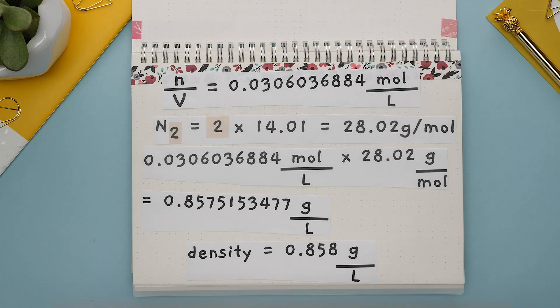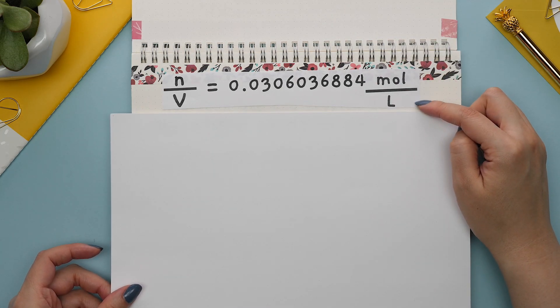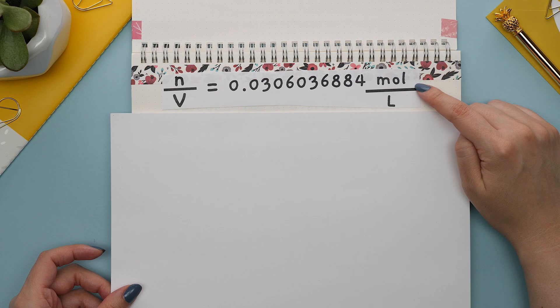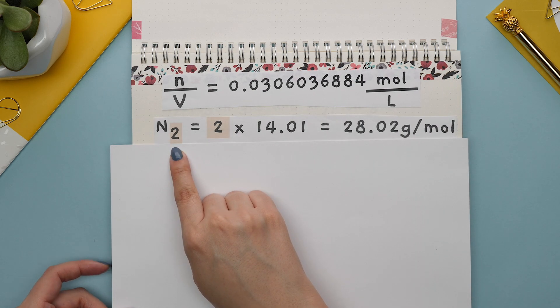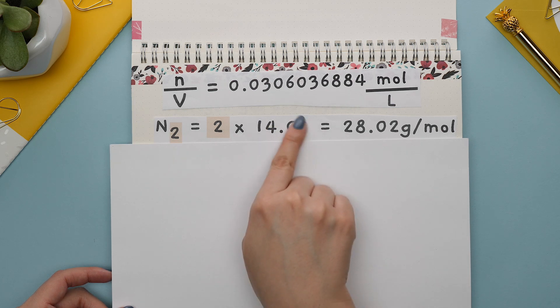We now have moles over liters but we want the density which is in grams over liters, and since this question told us that this is all for N2, we can use the molar mass of N2 to find the grams for the density.